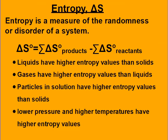Delta S, or entropy, is the measure of randomness or disorder in a system.